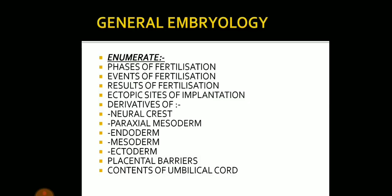In case of general embryology, the enumerate questions come on the phases of fertilization, events of fertilization, and results of fertilization, which is very important. Ectopic site of implantation is also very important. Questions can also come on the derivatives of neural crest, paraxial mesoderm, endoderm, mesoderm, ectoderm, and the placental barriers and the contents of the umbilical cord. Placental barriers is very important.